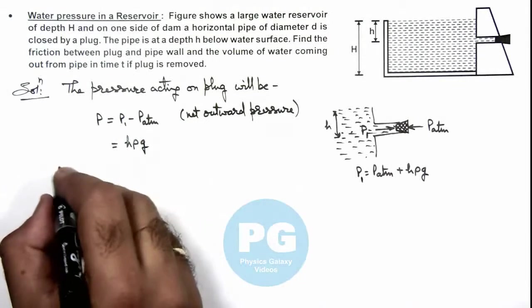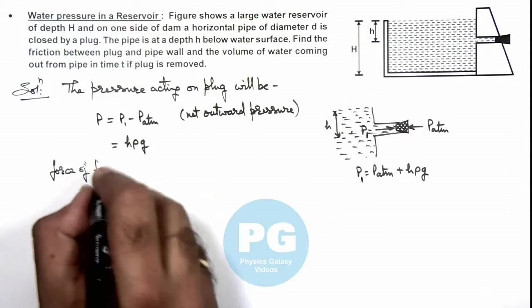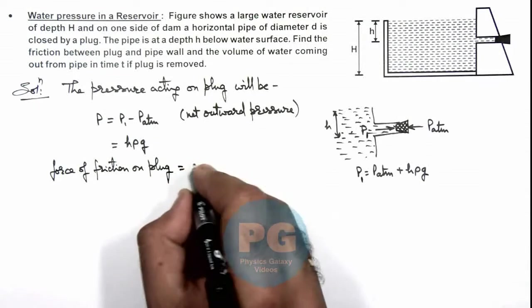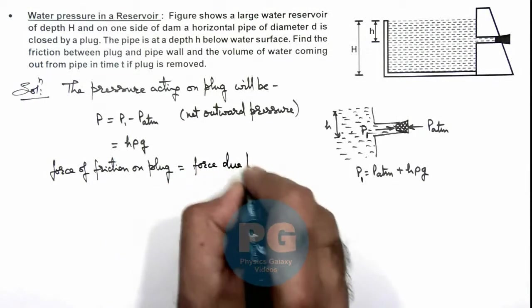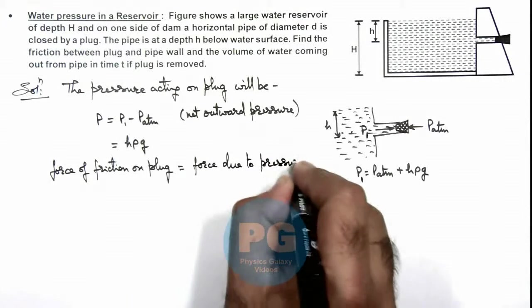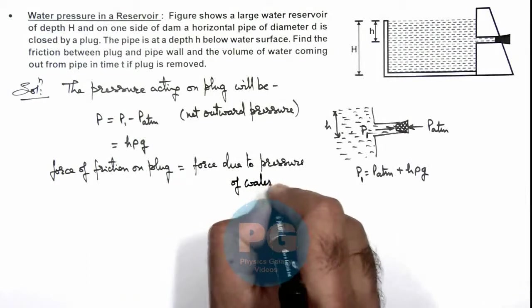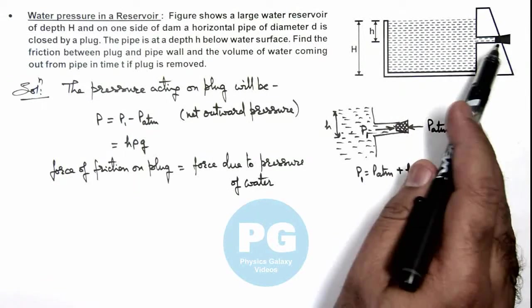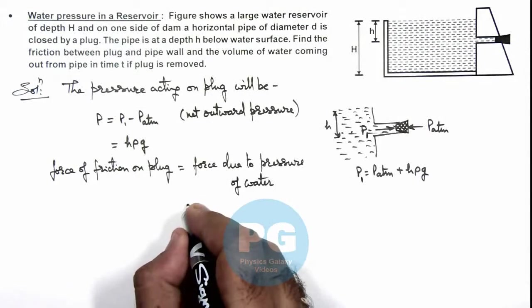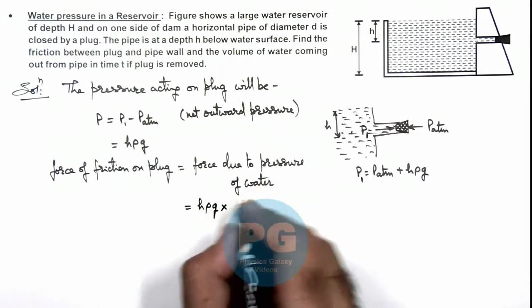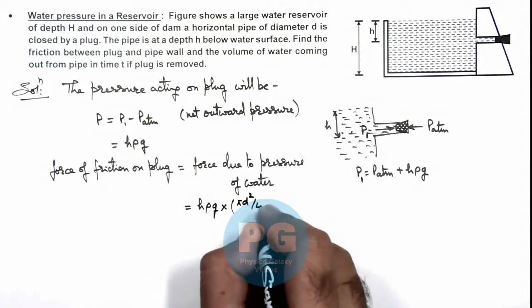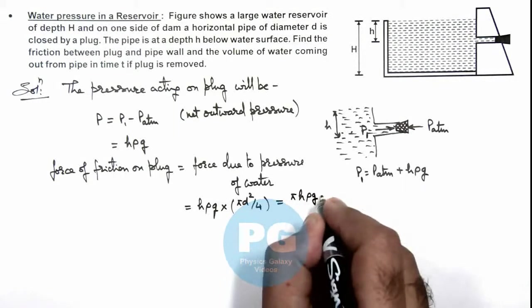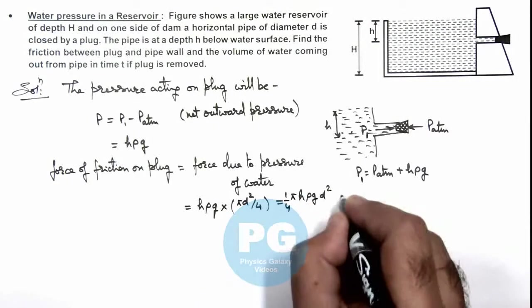If we calculate the force of friction on plug, this will be equal to the force due to pressure of water, as friction is keeping this plug at rest. The excess pressure exerted by water on it will be balanced by friction. So this can be simply given as h ρ g multiplied by its cross-sectional area, π d² / 4. So the value here will be π h ρ g d² / 4, that is one result of the problem.